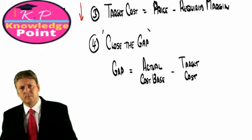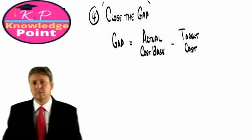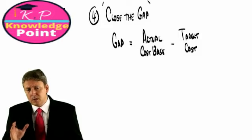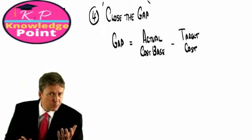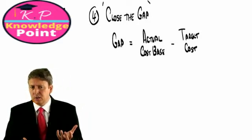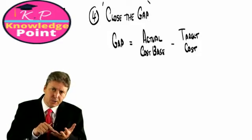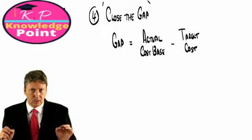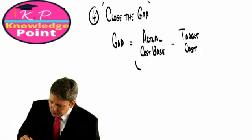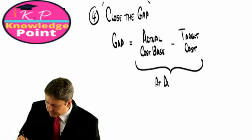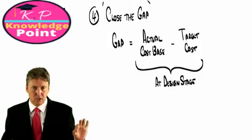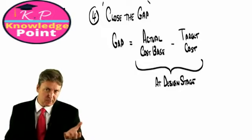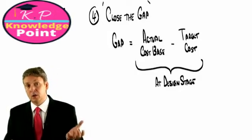So how do we do this? Well, the first thing we have to identify is this: we must do target costing before we start producing the product. Because once the product's in production, we really can't save that much on the basis that the way that we produce it and the components that go into the product are already determined. So the first thing we have to do is remember that we close the gap at the design stage. In effect, we attempt to reduce our cost base by designing out the costs, by trying to produce the same product at the same specification but with fewer costs associated with that production.